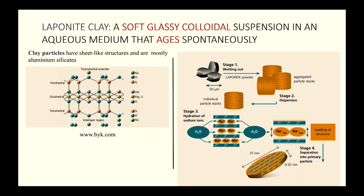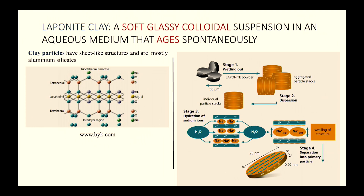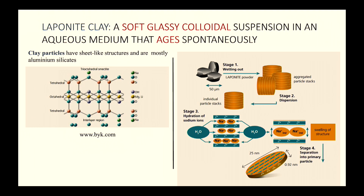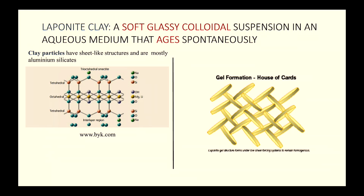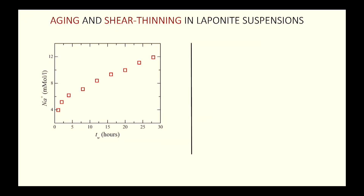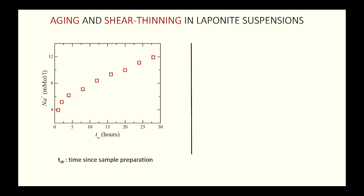As clay swells, the double layer repulsion eventually exceeds the interparticle van der Waals interaction, causing clay particles to peel off from the edges — a process called exfoliation. This is why aging happens: there is constant evolution of the microscopic structure. Particles are anisotropic with negatively charged faces and positively charged rims depending on pH.